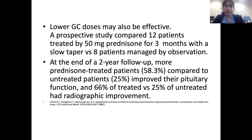Low glucocorticoid doses may also be effective. In a prospective study comparing 12 patients treated with 50 mg prednisolone for three months with slow taper versus eight patients managed by observation over two years' follow-up, more prednisolone-treated patients improved their pituitary function, and 66% of treated versus 25% of untreated had radiologic improvement.